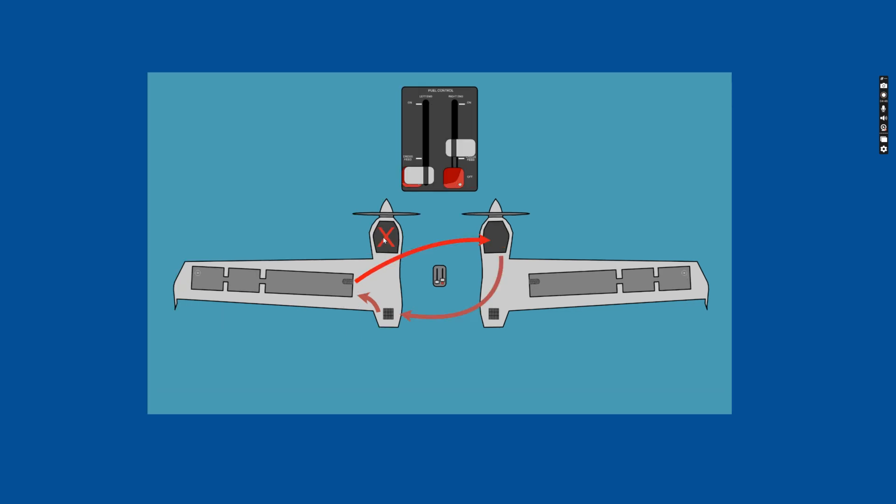In this one here, the left engine is failed, and fuel selector has been brought to off. And the right engine is set to cross feed, so the right engine is drawing from the left tank, and returning fuel to the left tank via the left side fuel cooler.